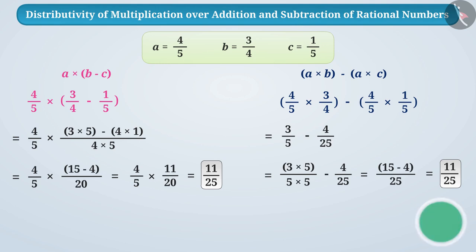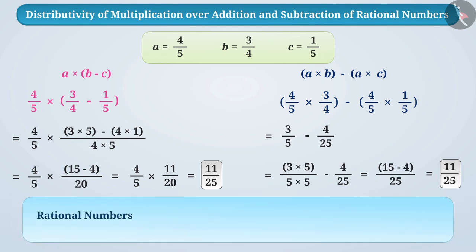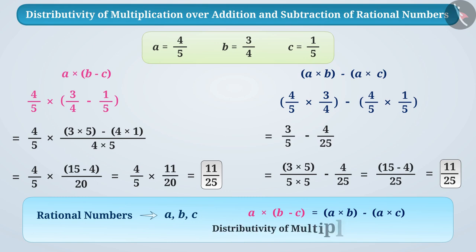Sure! We can say that for any three rational numbers a, b, c: a multiplied by (b minus c) is equal to a multiplied by b minus a multiplied by c. We call this distributivity of multiplication over subtraction.